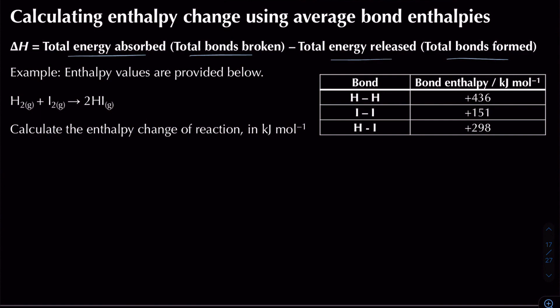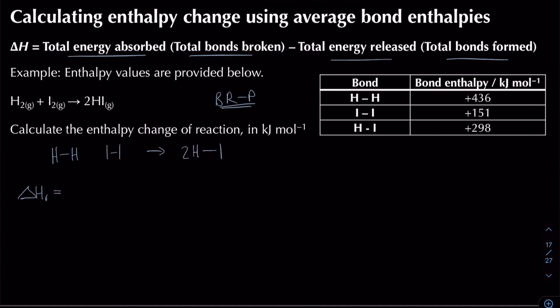I like to start by drawing out the molecules to avoid simple mistakes. Here I have hydrogen, iodine, and they react to form two lots of hydrogen iodide. To calculate the enthalpy change I use reactants minus products — bonds broken minus bonds formed, total energy absorbed minus total energy released. I remember this as BRAP.